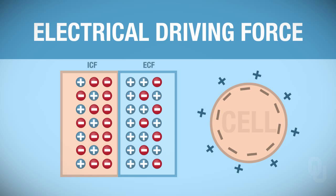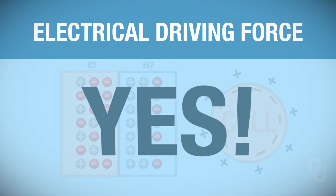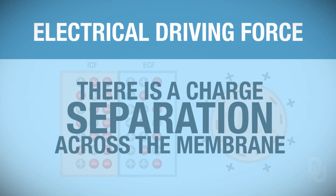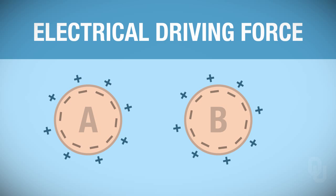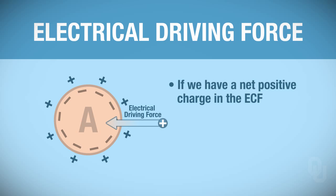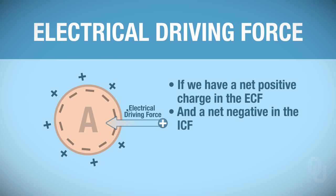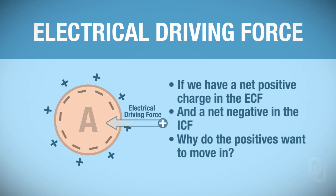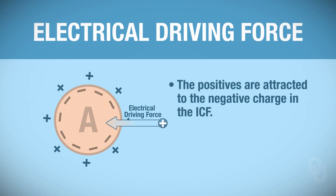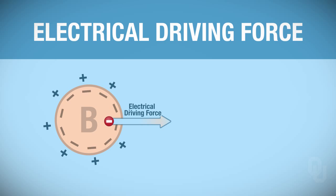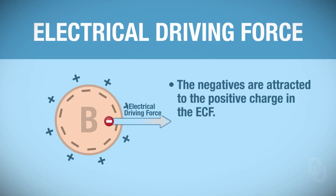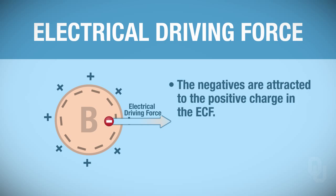Once you see this, you can ask yourself: is there an electrical gradient? Yes—there's an electrical gradient because there's a difference in charges across the membrane, also called a charge separation. In Figure A, the driving force is into the cell because the net positive in the extracellular fluid is attracted to the net negative in the intracellular fluid—opposites attract, so positives move inward. In Figure B, the negatives want to move out because they're attracted to the positives on the outside of the cell.